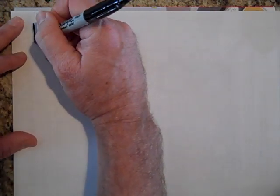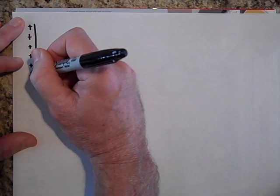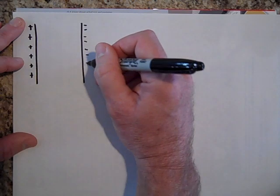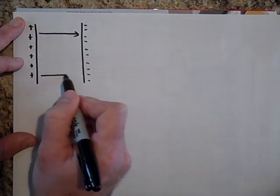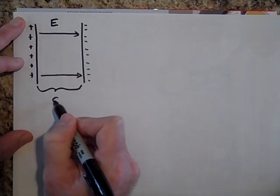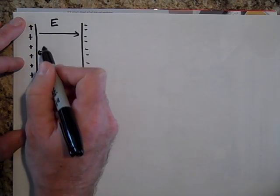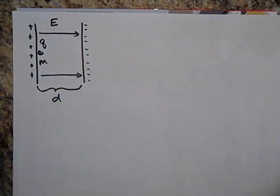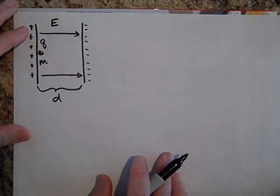We have a positive plate, a negative plate. Field's going this way. Just draw a few field lines. The field is E. This distance is D. We're going to put a positive charge here. It's going to have a charge Q and a mass M and that's a positive charge. So it's going to zip that way. It's going to start at this plate and zip that way.